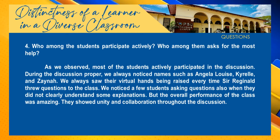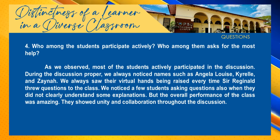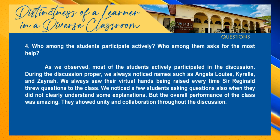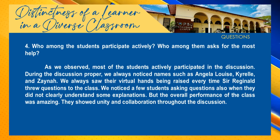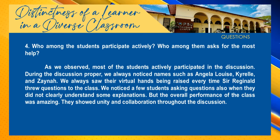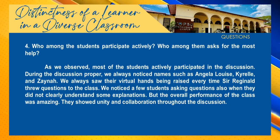I am Adun J. M. Quirante. Here's our answer to observation guide for learners' characteristics, question number four. Who among the students participate actively and who among them asked for the most help? Most of the students actively participated in the discussion. During the discussion proper, we always noticed names such as Angela-Louise, Kyrel, and Zaina. We always saw their virtual hands being raised every time Sir Reginald threw questions to the class. We noticed a few students asking questions when they did not clearly understand some explanations, but the overall performance of the class was amazing. They showed unity and collaboration throughout the discussion.